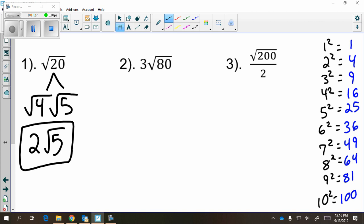For example 2, you're going to do the same thing. What's the largest perfect square that goes into 80? You might think that the largest perfect square that goes into 80 is 4, because you have 4 times 20. But we just saw that 20, or rather the square root of 20, can be simplified. So 4 is not the largest perfect square.